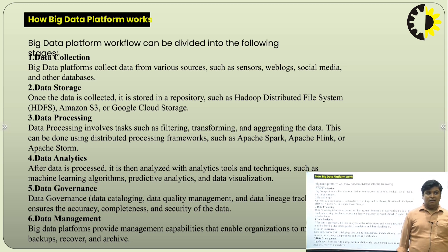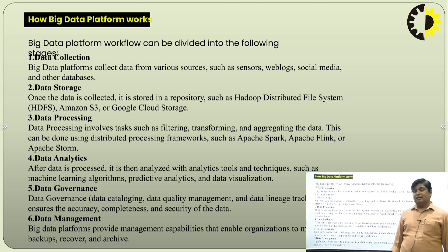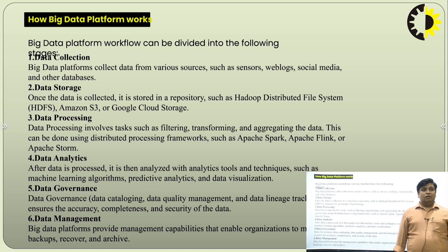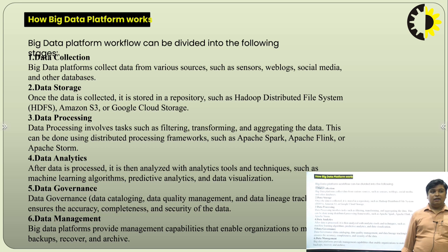The fourth phase is data analytics. After data is processed, it can be analyzed with analytics tools and techniques such as machine learning algorithms, predictive analysis, and data visualization — where we can plot different types of graphs for a particular dataset. The fifth phase is data governance, which means data cataloging, data quality management, and data lineage tracking — ensuring the accuracy, completeness, and security of the data. Whatever data you store or analyze, providing security on particular data is the most important point.